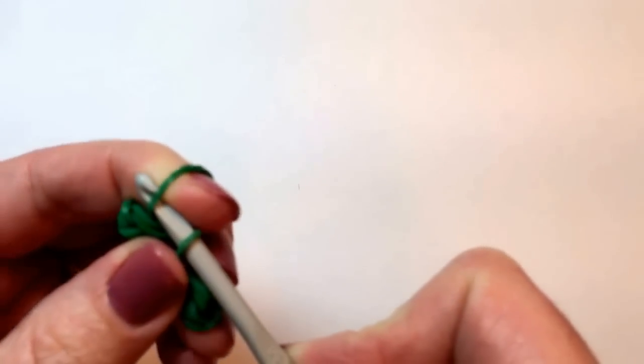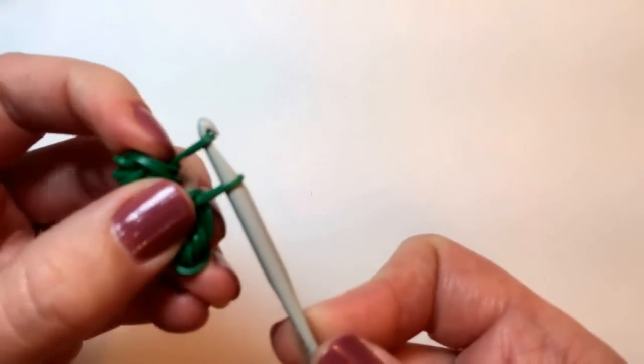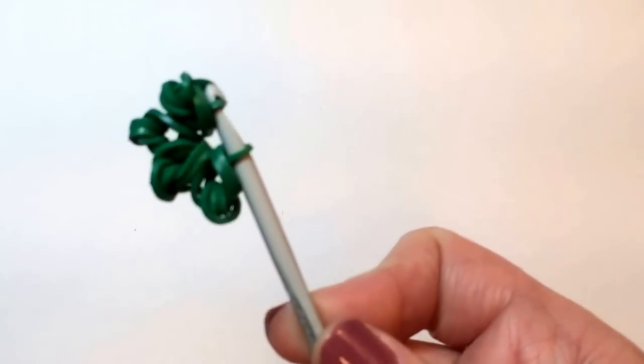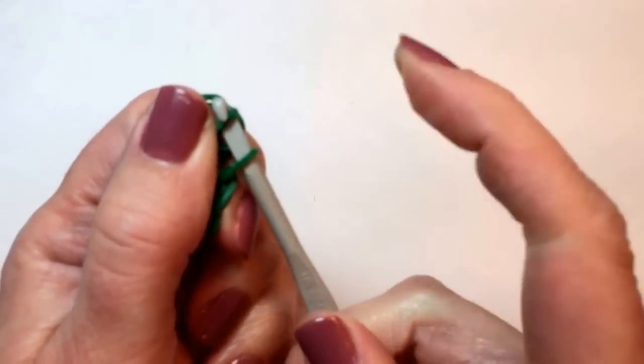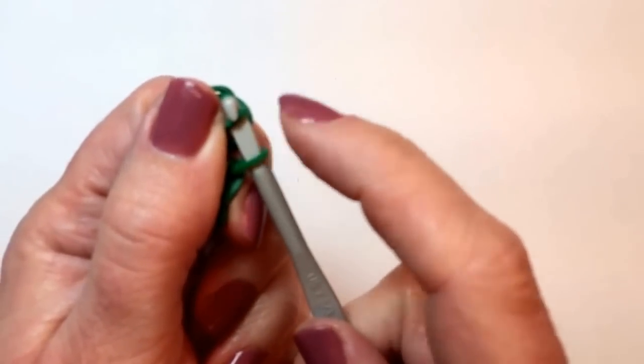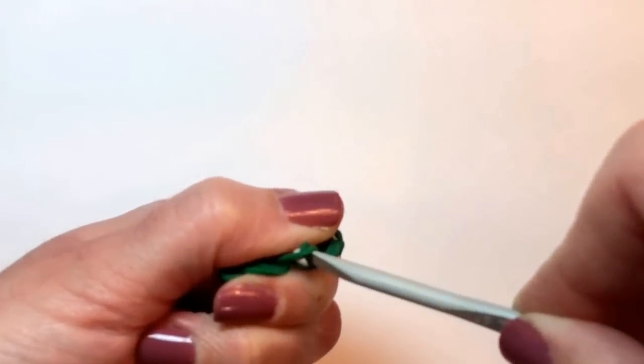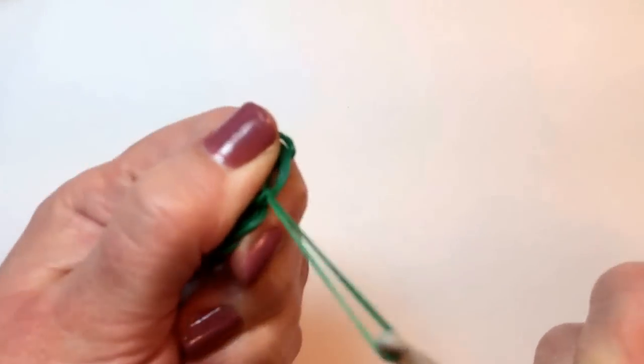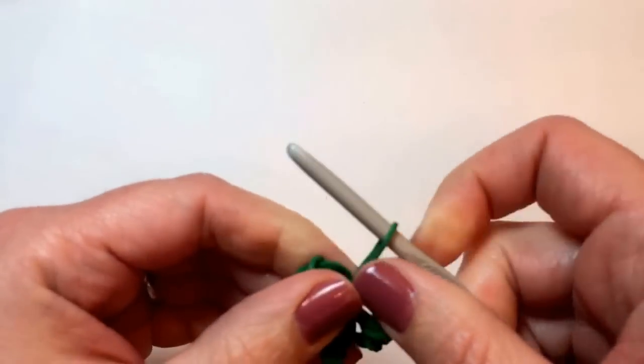And then hook the other side of the rubber band so that both sides are on the hook. Take this side through the center of this side to create a slipknot that's going to hold your four-leaf clover together.